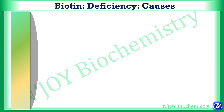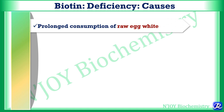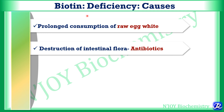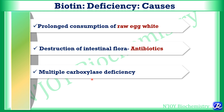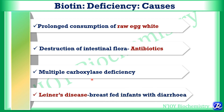Biotin deficiency can occur in a variety of conditions. Prolonged consumption of raw egg white — because egg white contains avidin, which inhibits absorption of biotin — consuming around 20 raw eggs per day can cause deficiency. Destruction of intestinal flora by antibiotics can also lead to deficiency. Multiple carboxylase deficiency can cause biotin deficiency. In breastfed infants with diarrhea, since breast milk is a poor source of biotin, Leiner's disease can occur.